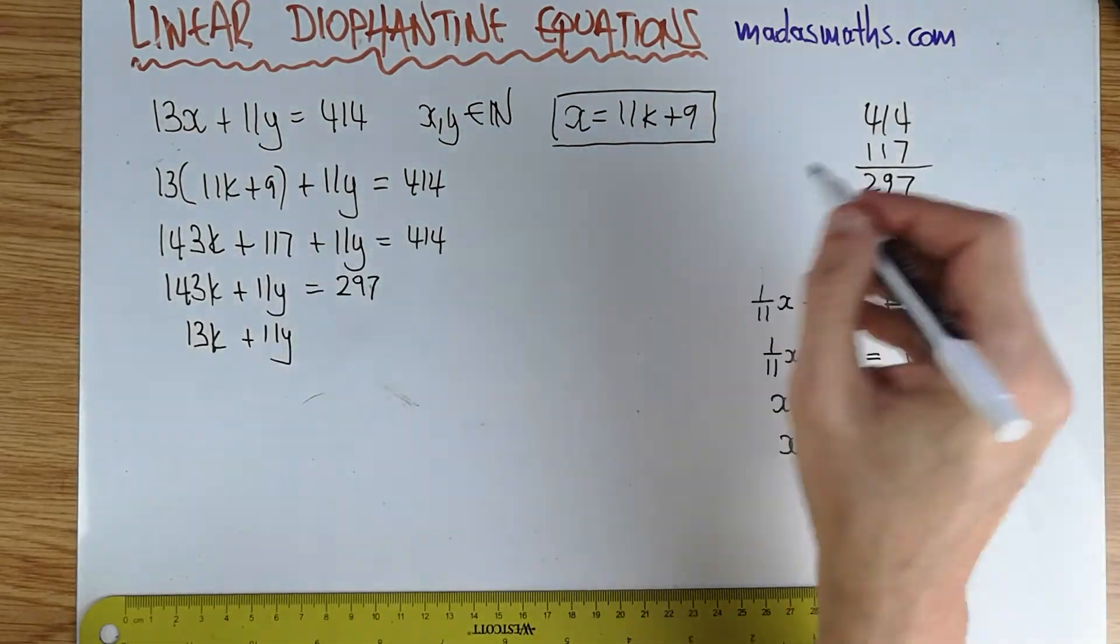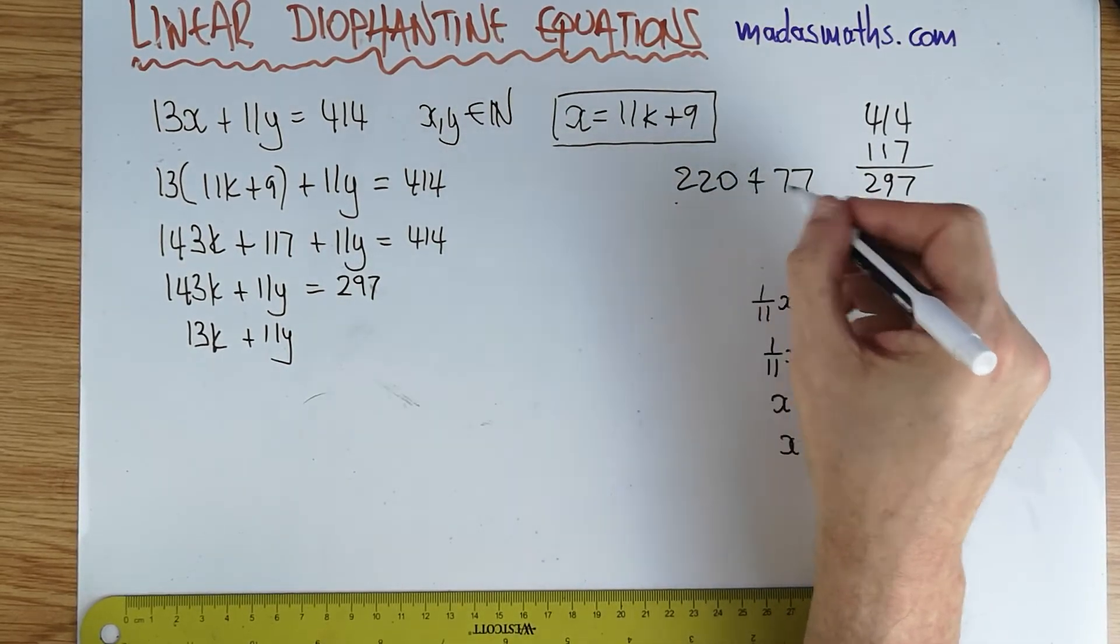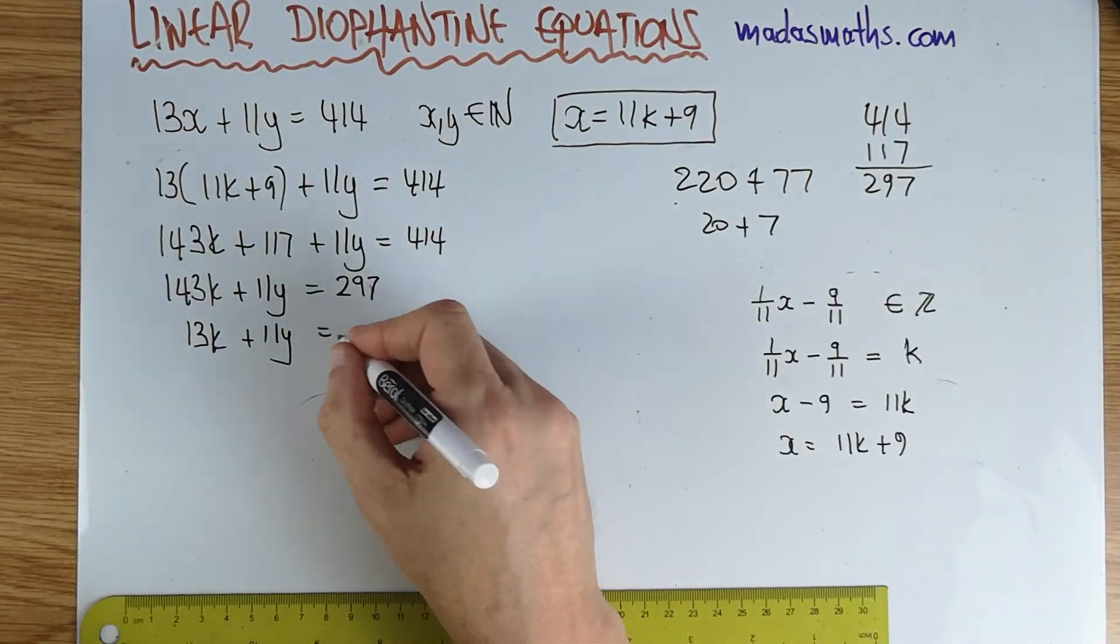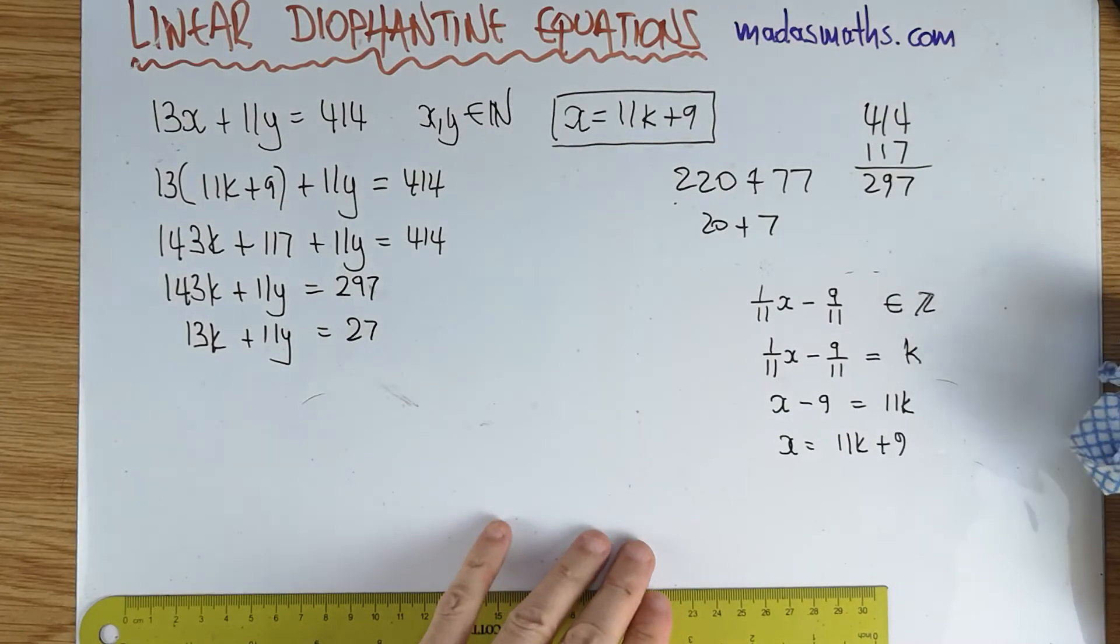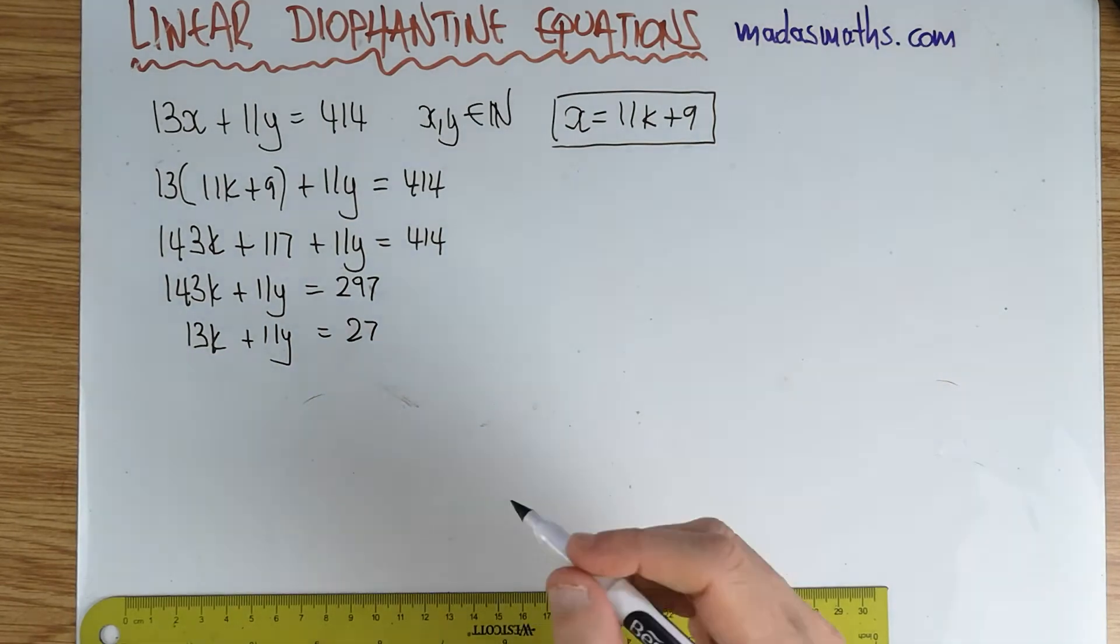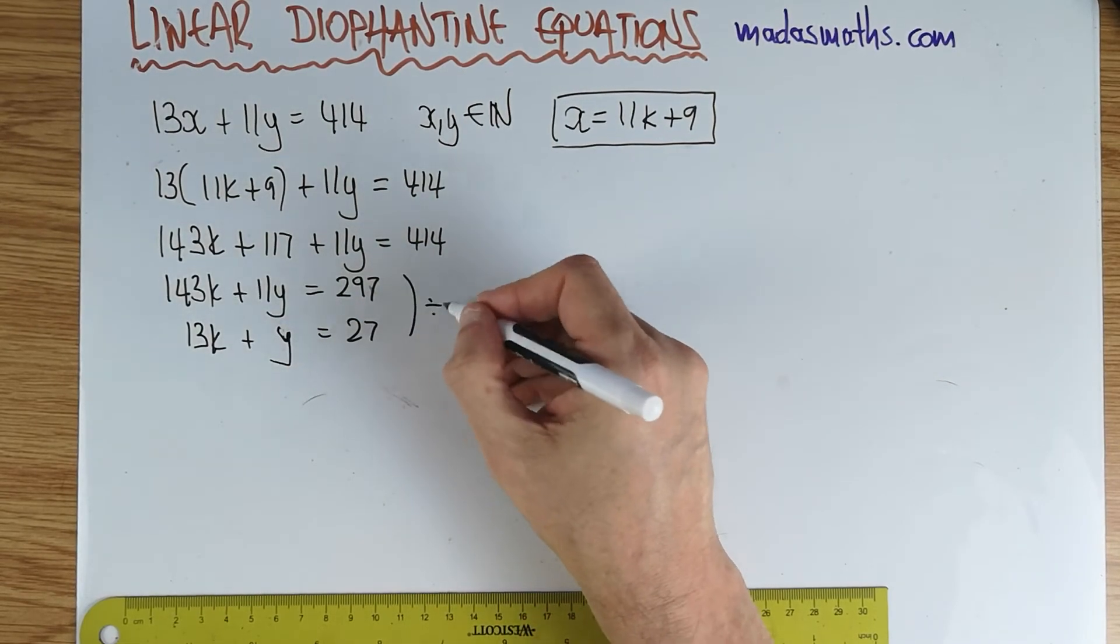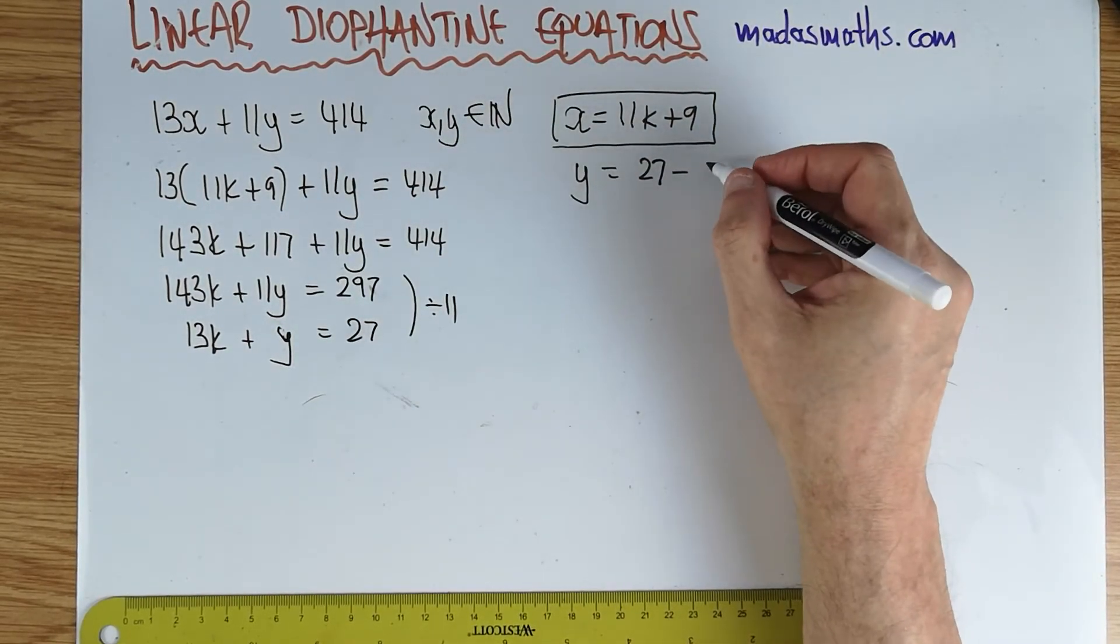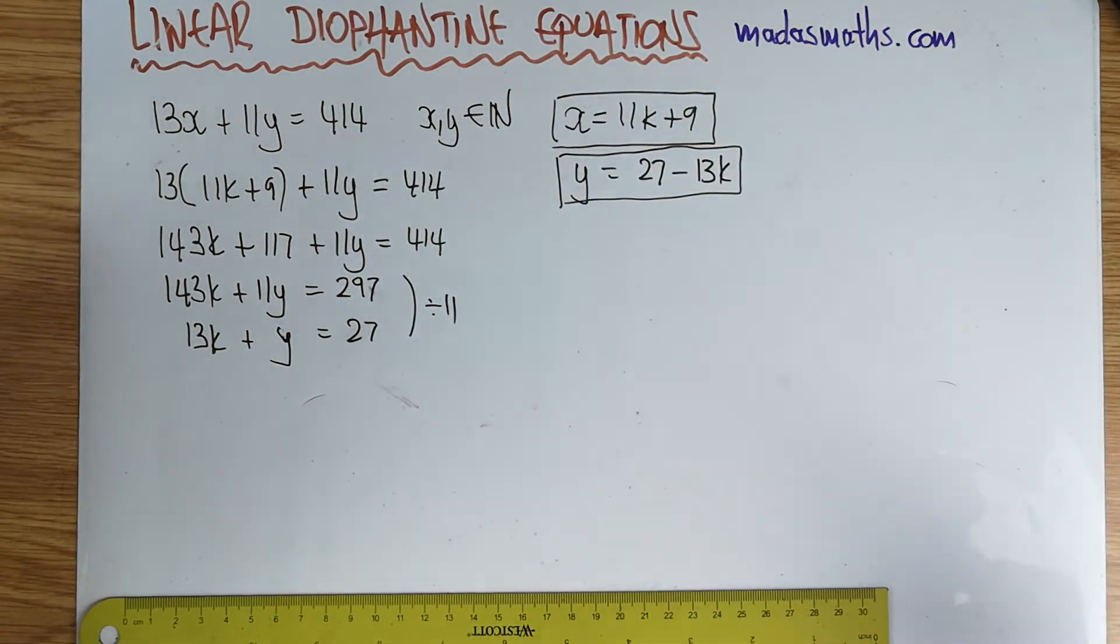And the 297, I can write, I'm divided by 11, so if you divide by 11, that will be now 27, so it's equal to 27. So let me just rub off these workings on the right-hand side, and I've divided by 11, so from this line to this line, and therefore my y is going to be 27 minus 13k.